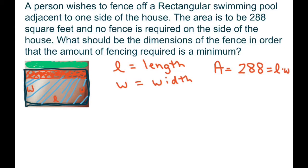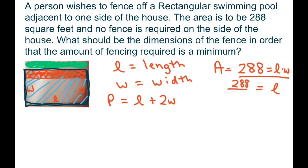We know that length times width equals 288, which is the area. And our perimeter in this case, since we don't need one side, is going to be L plus 2W. If we solve for L, we get L equals 288 over W. So our perimeter now is going to be 288 over W plus 2W.